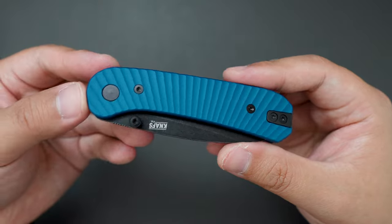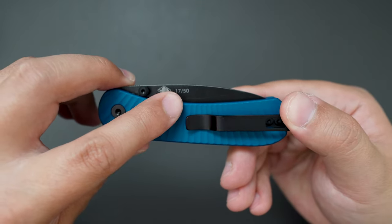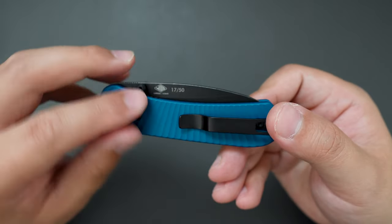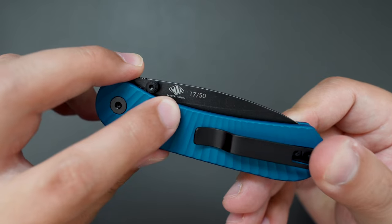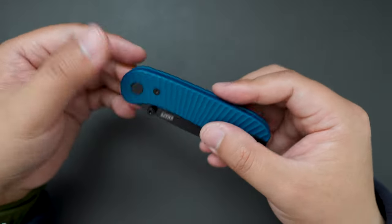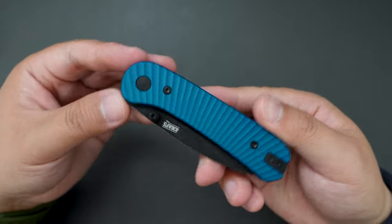Look at this knife. This is number 17 out of 50. Super cool. S35VN steel. And this solar flare blue aluminum handle looks amazing.